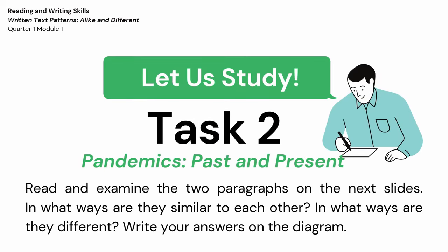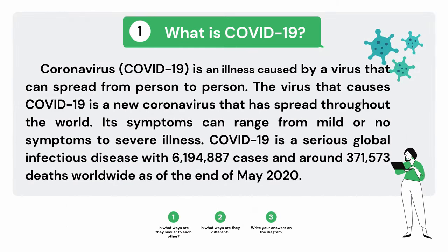Let us study Task 2: Pandemics, past and present. Read and examine the two paragraphs on the next slides. In what ways are they similar? In what ways are they different? Write your answer on the diagram. What is COVID-19? Coronavirus or COVID-19 is an illness caused by a virus that can spread from person to person. The virus that causes COVID-19 is a new coronavirus that has spread throughout the world. Its symptoms can range from mild or no symptoms to severe illness. COVID-19 is a serious global infectious disease with 6,194,887 cases and around 371,530 deaths worldwide as of end of May 2020.